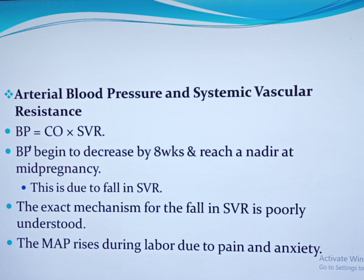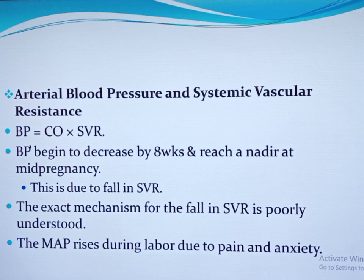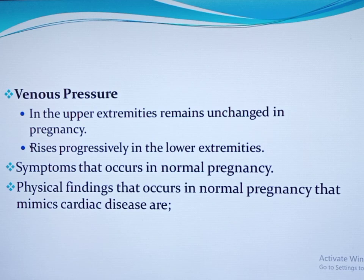The exact reason for the fall in systemic vascular resistance is poorly understood, but explanations include vasodilatation mediated by progesterone and nitric oxide, and blunted vascular responsiveness to the pressor effects of norepinephrine and angiotensin 2. Mean arterial blood pressure also increases during labour due to pain and anxiety. Now let us see venous pressure.